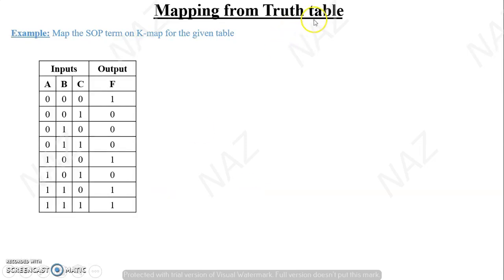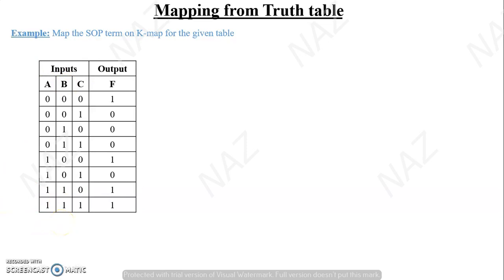Now, mapping from truth table. We will map the SOP term on the K-map from a given truth table. Suppose this truth table is given and you are supposed to map the output on the K-maps. According to the truth table, if there are three literals in the given expression, then we know that in the K-map, we will be using a three-variable K-map.